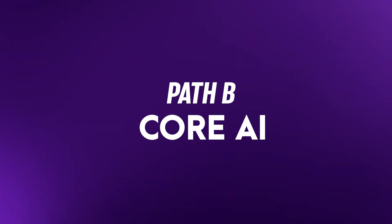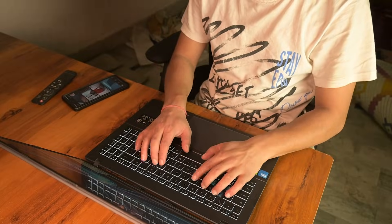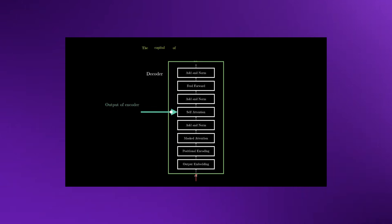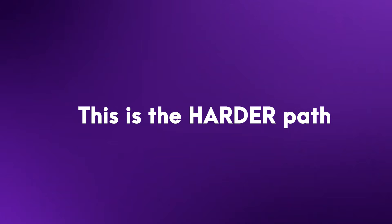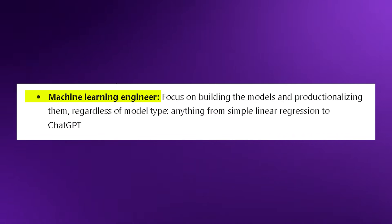Path B: Core AI. This is for the Architects. You are the one building and training the models from the ground up. You want to know exactly how a transformer or a diffusion model actually works. This is the harder path — the path of an AI engineer or AI researcher. For the rest of this video we are going down Path B, but if you want a separate video on Applied AI, comment 'Applied AI' and I'll make that video.